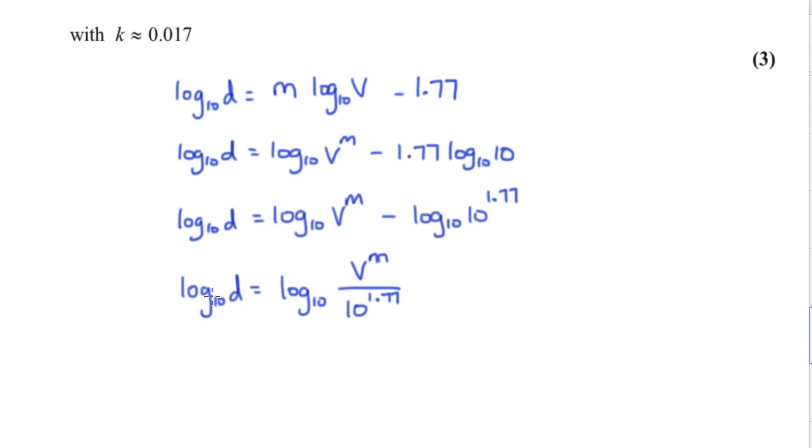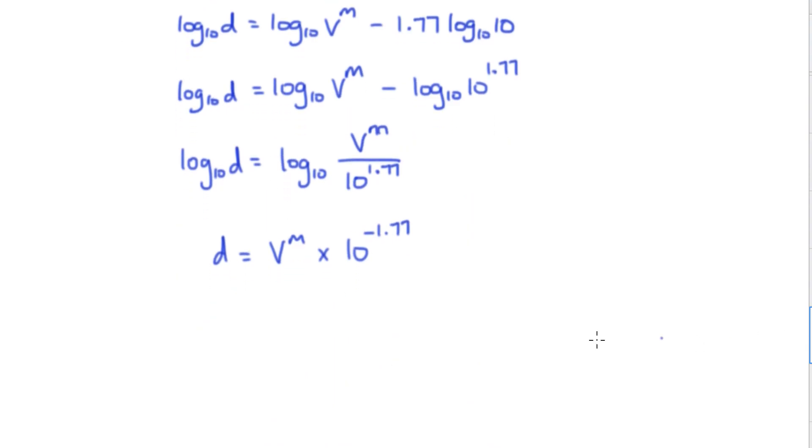Which means, because they're both log to the base 10, we can then say d is equal to v to the power of m, and I can say that this is times by 10 to the negative 1.77.